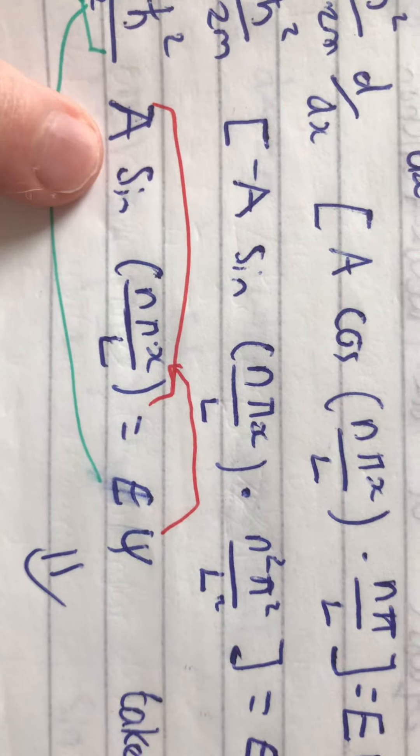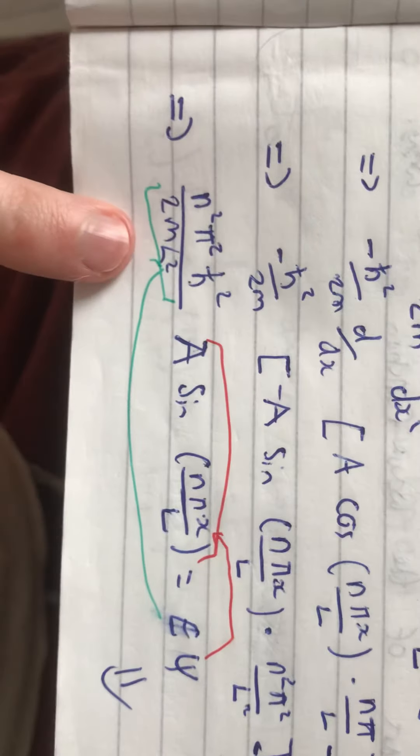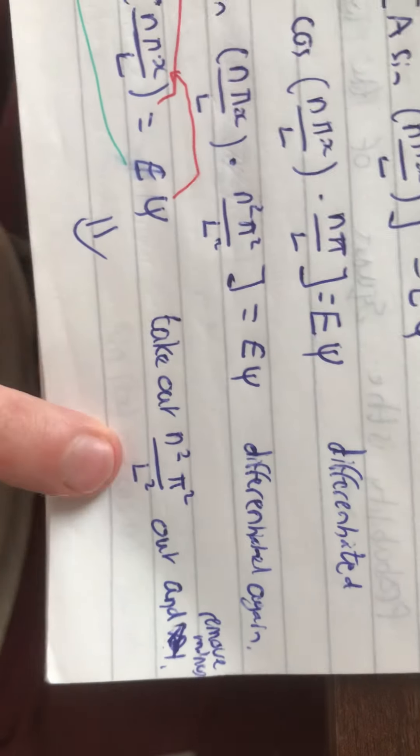we know that the wave function is equal to this part, because we derived that earlier up here. And, this is the energy part there. So, if we take our n squared π squared over L squared, we get that.